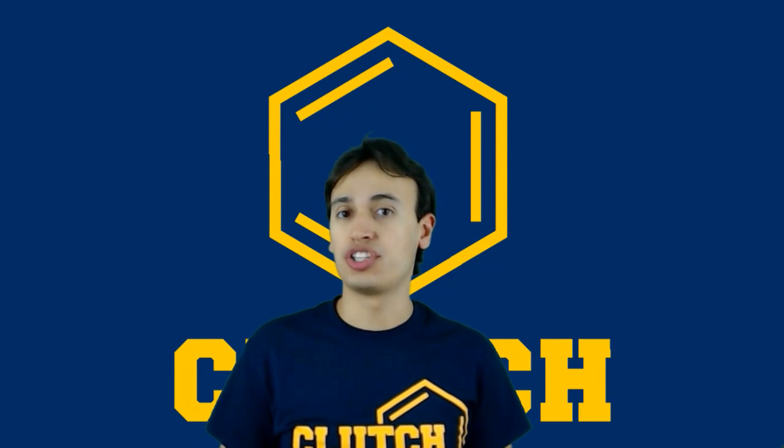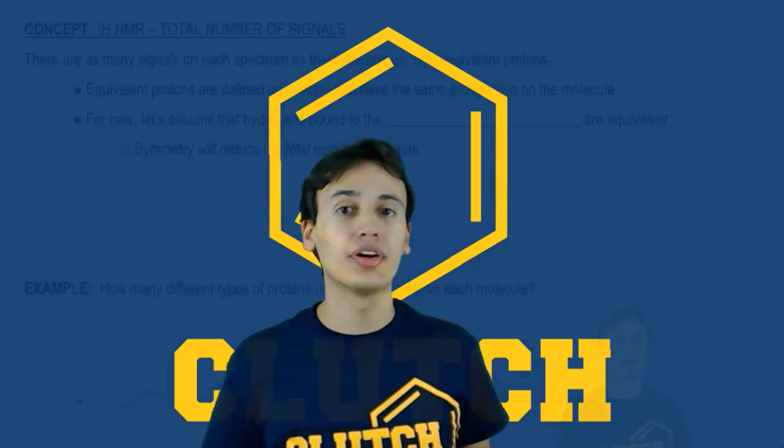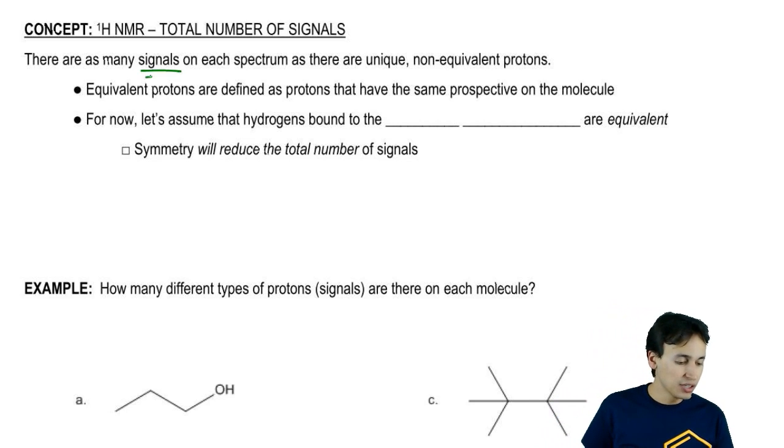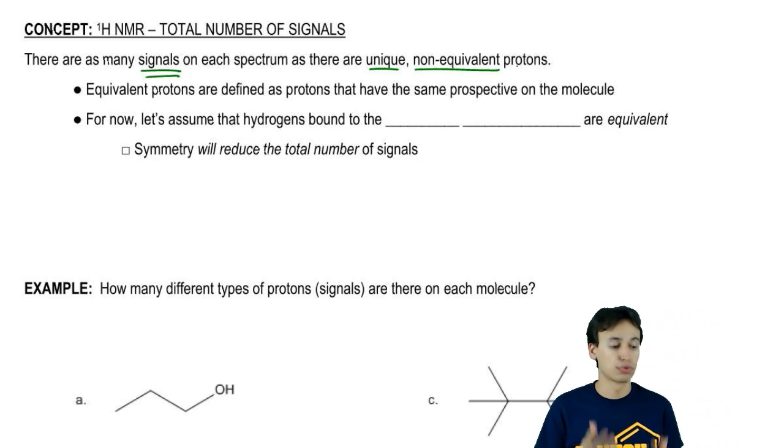Let's discuss the first piece of information that we can derive from a proton NMR and that's the total number of signals. On a typical proton NMR, there's going to be as many signals on the spectrum as there are unique non-equivalent types of protons.